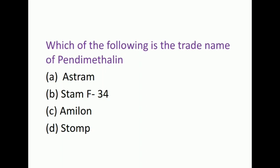Next question: Which of the following is the trade name of pendimethalin? The options are Astralon, Stam F-34, Ametryne, Stomp. The right answer is Stomp. Pendimethalin belongs to the group dinitroanilines. It is a pre-plant soil incorporated herbicide found effective against a number of annual weeds, particularly grasses in cotton, soybean, groundnut, and pea. It can also be used as pre-emergence herbicide in maize, rice, small grains, onion, and potato.